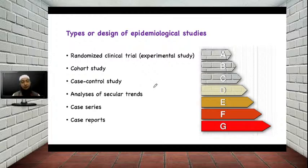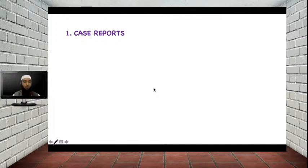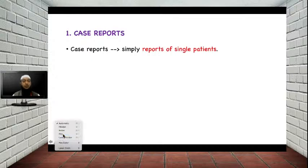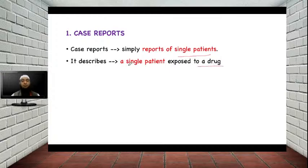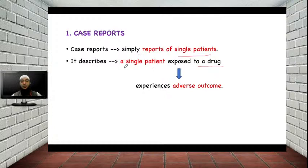We will start from the last study first and see the first study at the end. The smallest study design in epidemiological study is basically the case report. The case report is a study where a report of a single patient is studied — it describes a single patient exposed to a drug. That patient exposed to the drug may produce some adverse outcome, and if that patient experienced an adverse outcome related to the drug, those can be reported as a case report.